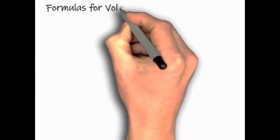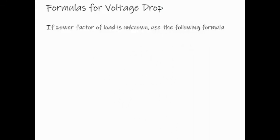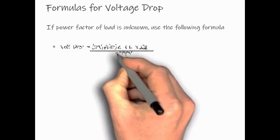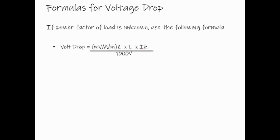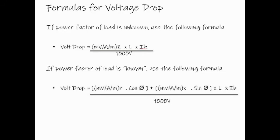To calculate voltage drop, there are two key formulas. If the power factor of the load is unknown, we will use the following formula: Voltage drop equals Z, which is the value of the impedance voltage drop, multiplied by L, multiplied by current in the circuit, and divided by 1000 volts. If the power factor of the load is known, we will use the following: Voltage drop equals R, which is the value of the resistive voltage drop, multiplied by cosine theta, plus X, which is the inductive reactance value, multiplied by sine theta, multiplied by L, that refers to the cables in meters, multiplied by current in the circuit, divided by 1000 volts.